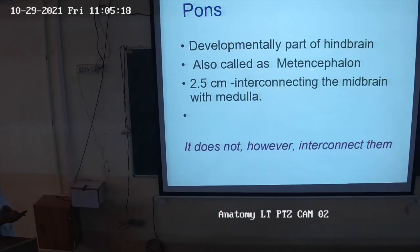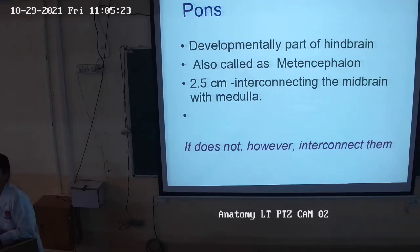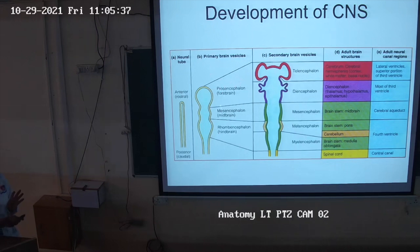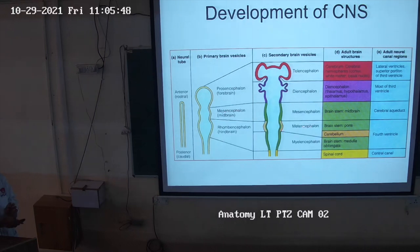Developmentally, the pons is part of the hindbrain, and it develops from the metencephalon. The brain has three divisions: the prosencephalon (forebrain), mesencephalon (midbrain), and rhombencephalon (hindbrain). The rhombencephalon divides into the metencephalon and myelencephalon. The metencephalon develops into the pons and the cerebellum, while the myelencephalon develops into the medulla.